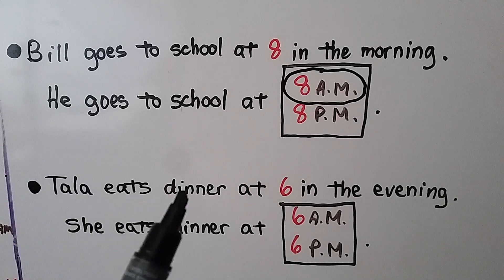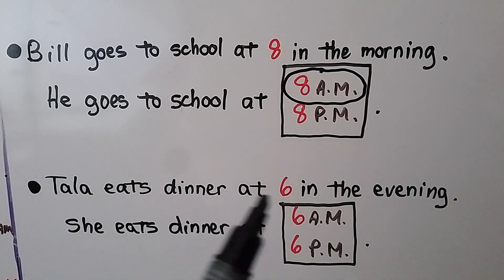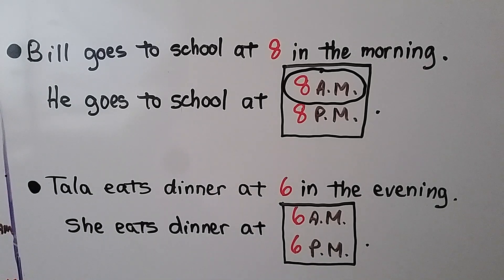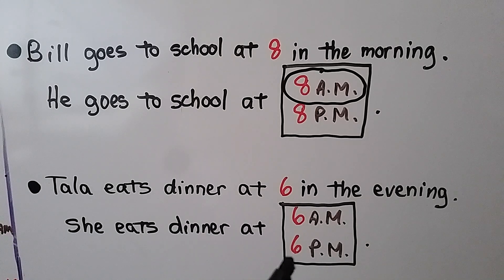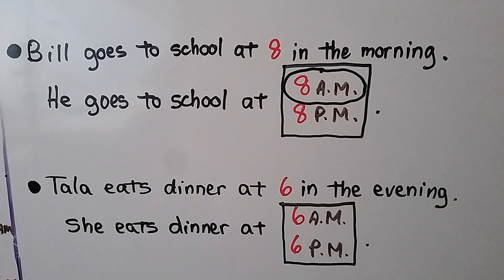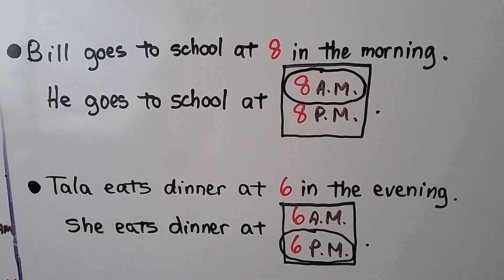Tala eats dinner at six in the evening. She eats dinner at — is it 6 A.M. or 6 P.M.? Do you remember which one means evening or nighttime? If you said 6 P.M., you're correct!